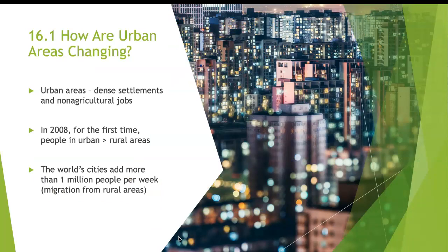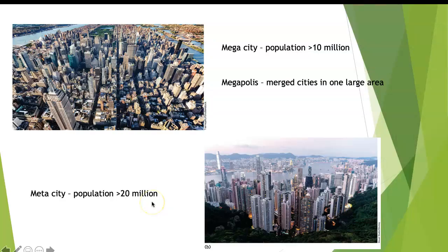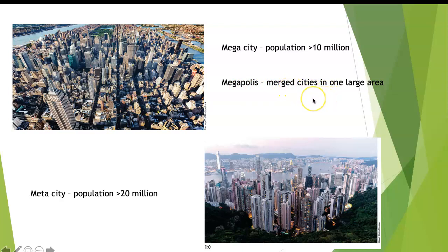How are urban areas changing with more and more people? The world's cities add more than one million people per week. A megacity has a population over 10 million, and a megalopolis can have a population of 20 million people. We often use the word metropolitan area, which means a large area with emerging cities where it's hard to distinguish which city is which.